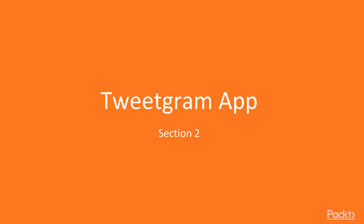Hello and welcome to the next section in this course where we're going to be creating the Tweetgram app. Basically what we're trying to do is make a version of Twitter where instead of looking for the tweets, we are looking for the images that might be inside of some tweets. And then if you want to see some more detail, you can go find that individual tweet. The whole idea is that we let the user log into Twitter, get their home feed, and then we go through all those tweets and say, are there any images inside of here? And if there are, we want to go ahead and grab those and bring them back on the screen.